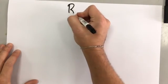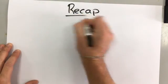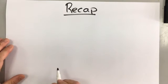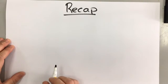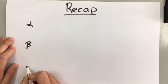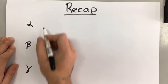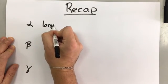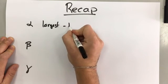To recap, there are three types of radiation that can be emitted from the nucleus of an atom: alpha, beta, and gamma. Alpha is the largest and it is a helium nucleus.